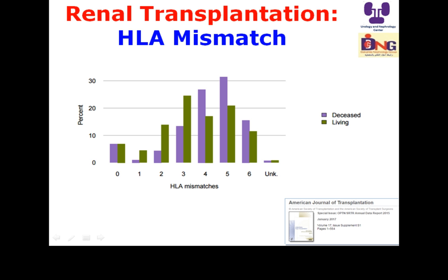Looking at the data and registry regarding classic HLA mismatch: because we have one chromosome from the father and one from the mother, we look at HLA-A, HLA-B, and HLA-DR — three antigens from each parent, giving six total. The match ranges from zero to six between recipient and donor. This figure shows the distribution of mismatch for both deceased kidney transplantation and living transplantation. Zero mismatch means the recipient and donor are compatible at all six antigens.